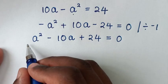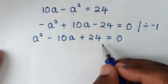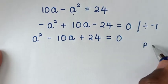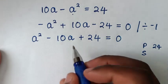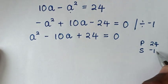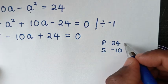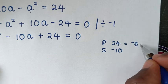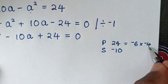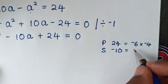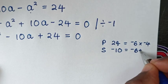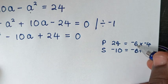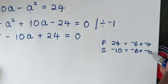Then, from this quadratic equation, it can be solved by grouping and factorization. The product is 24 and the sum is the coefficient of a, which is negative 10. To get the product of 24 and sum of negative 10, we use negative 6 and negative 4, since negative 6 times negative 4 is positive 24, and negative 6 plus negative 4 is negative 10.